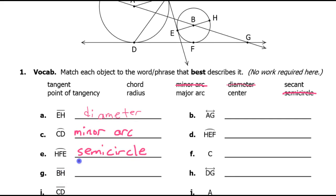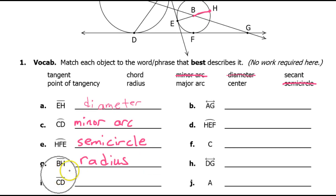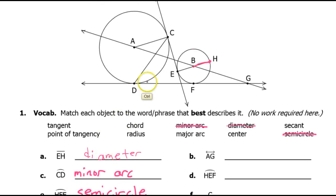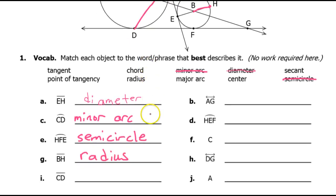Segment BH is right here. That is a radius — it goes from the center out to the edge. Segment CD is right here. That is a chord; it begins and ends on the circle.